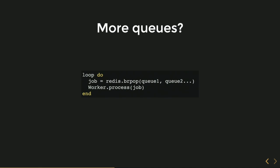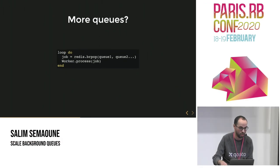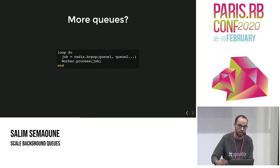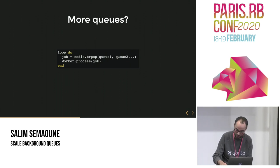At some point, we had jobs waiting more than two hours in our system — and it's not great when you're trying to send an OTP, for example. It can get you in trouble.